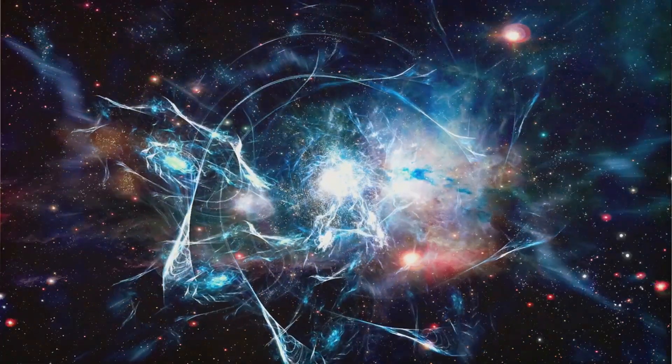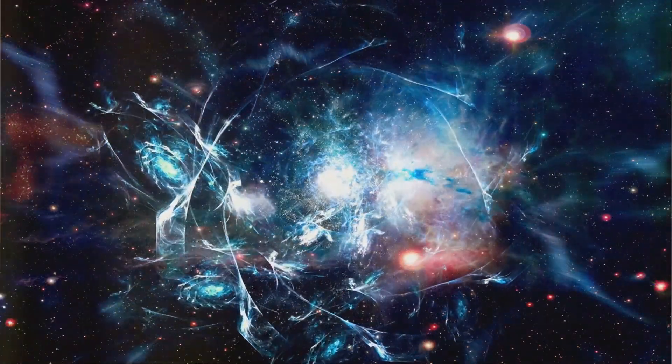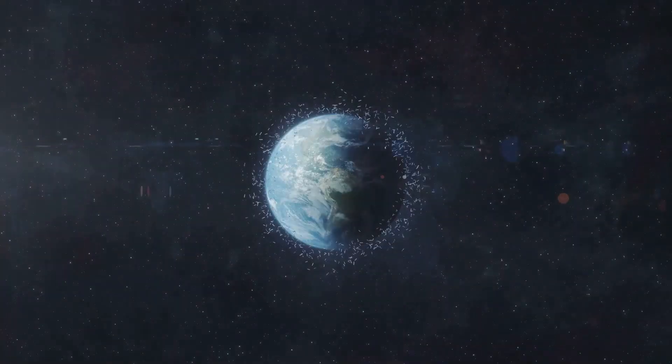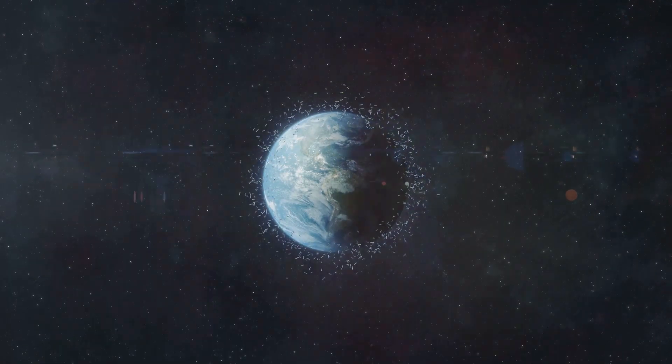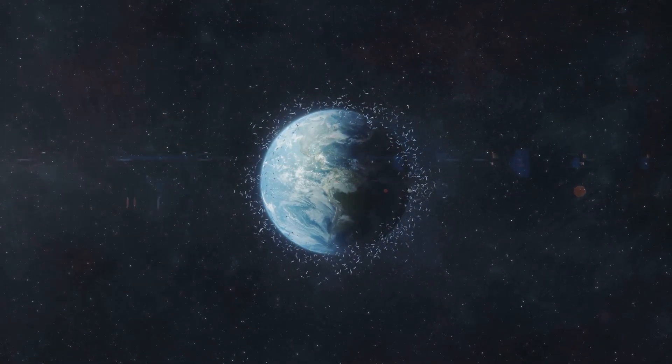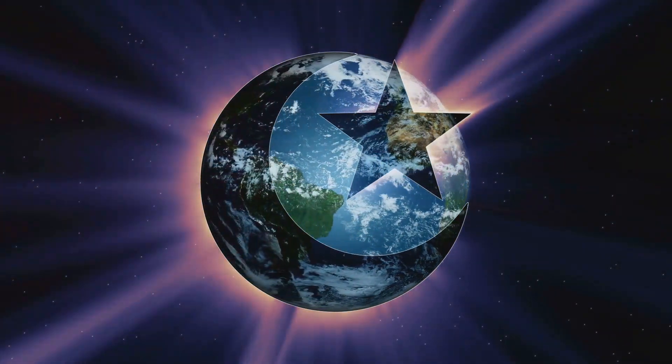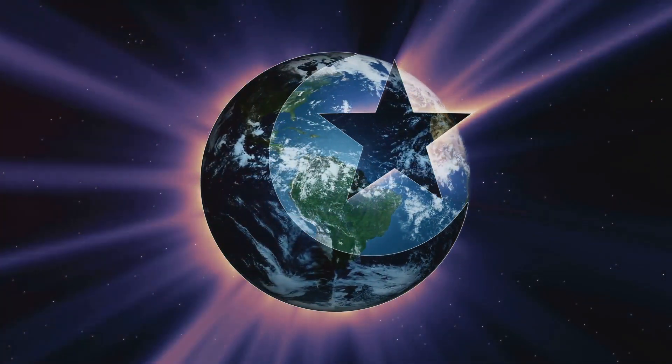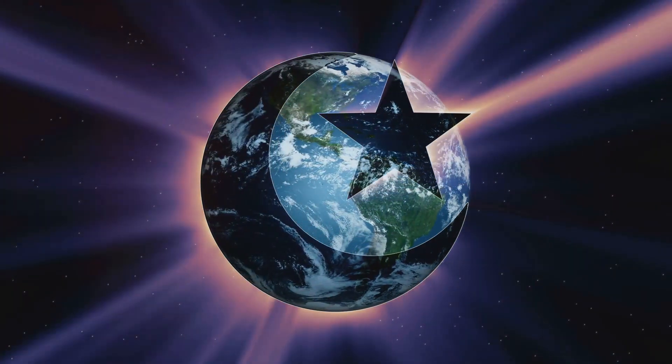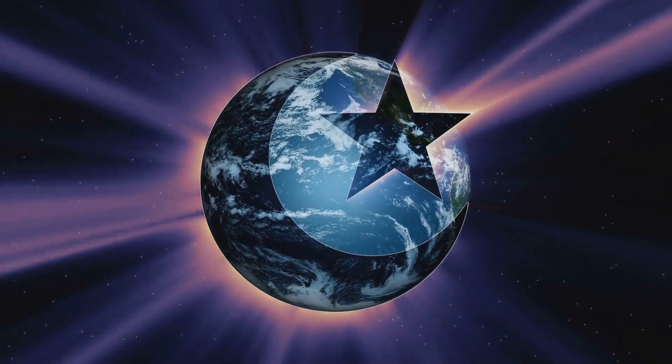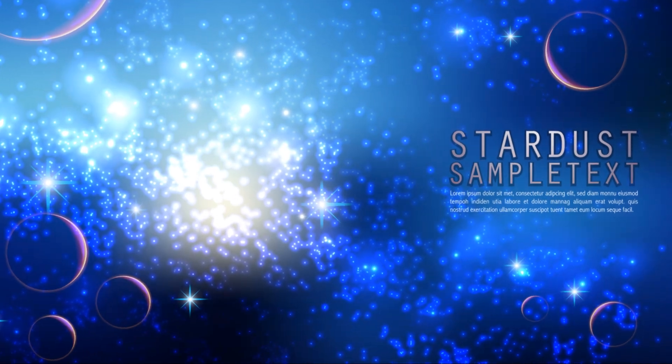These bodies eventually become planets, asteroids, and comets, enriched with the heavy elements from long dead stars. The Earth, our home, is a product of this cosmic recycling process. The iron in our planet's core, the oxygen we breathe, the calcium in our bones, and the carbon in our DNA, all were once part of stars that lived and died billions of years ago. We are literally made of stardust.